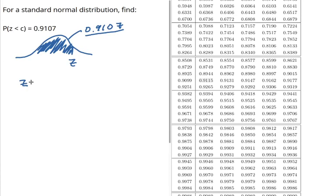So z is 1.345 because that number is in between 1.34 and 1.35. It's right in the middle.